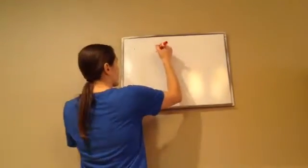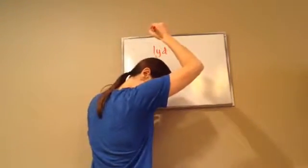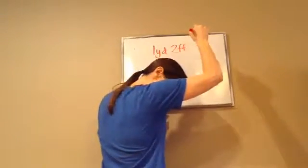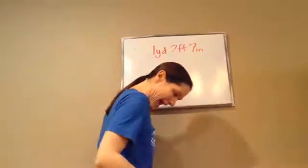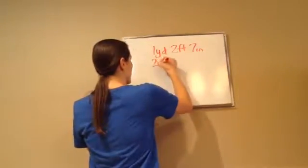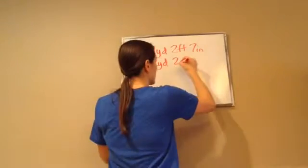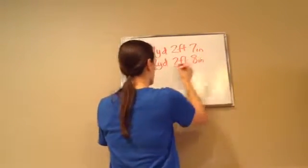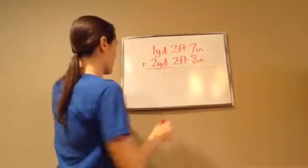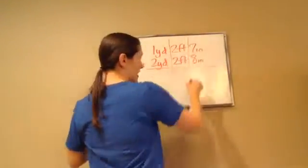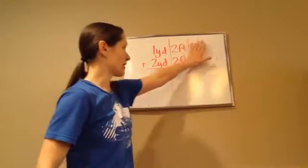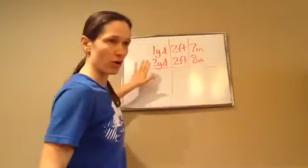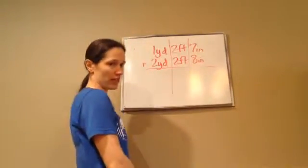Okay, so for example, we have 1 yard, 2 feet and 7 inches, and they want us to add 2 yards, 2 feet and 8 inches. Now the most important thing that we're going to pay attention to is you want to kind of divide it into 3 categories. We need to add the inches, add the feet, add the yards, and then we look at it overall and figure out if there's anything else we can do.